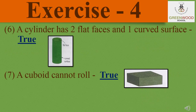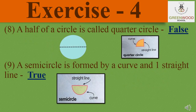A cylinder has two flat faces and one curved surface — true. It has two flat faces, one below and one above, and the rest is made up of curved surface. Seventh: a cuboid cannot roll — true, because it is completely made up of flat surfaces and objects with flat surfaces don't roll. Eighth: a half of a circle is called a quarter-circle — false, because a half of a circle is called a semi-circle. Ninth: a semi-circle is formed by a curve and one straight line — true, as you can see in the picture.